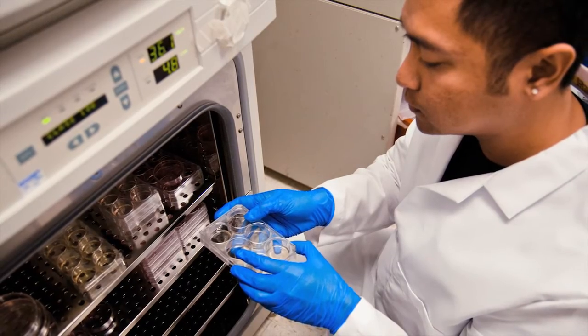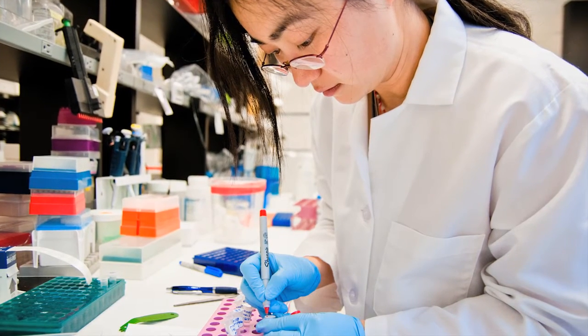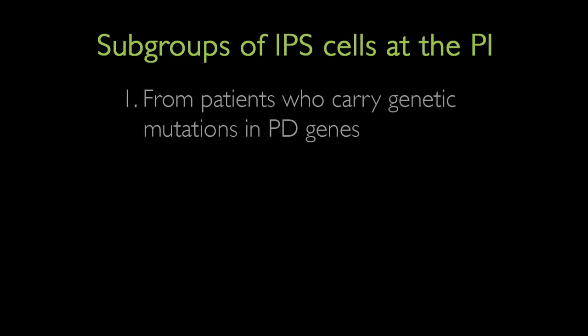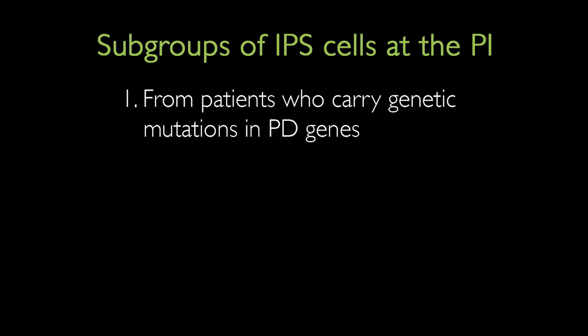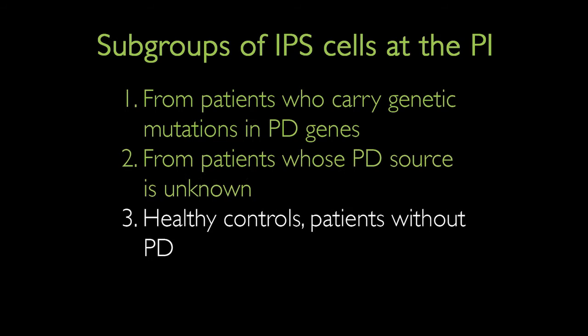Over the last three years we have derived over 60 lines from patients with the disease, and we have different subgroups. One group is carrying genetic mutations in PD genes. A second group consists of samples from patients with sporadic forms of disease, where we don't know the underlying genetic cause. And a third group comprises healthy controls — it's very important to include controls to see differences and understand disease mechanisms.